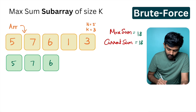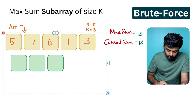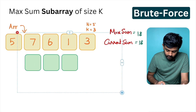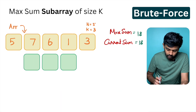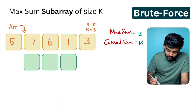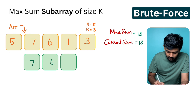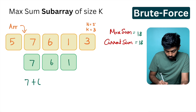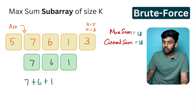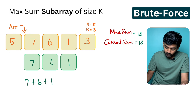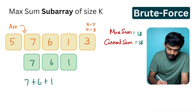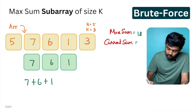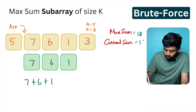Next subarray: we consider the next three elements — 7, 6, and 1. So 7 plus 6 plus 1: 6 plus 1 is 7, 7 plus 7 is 14. So the current sum value is 14.